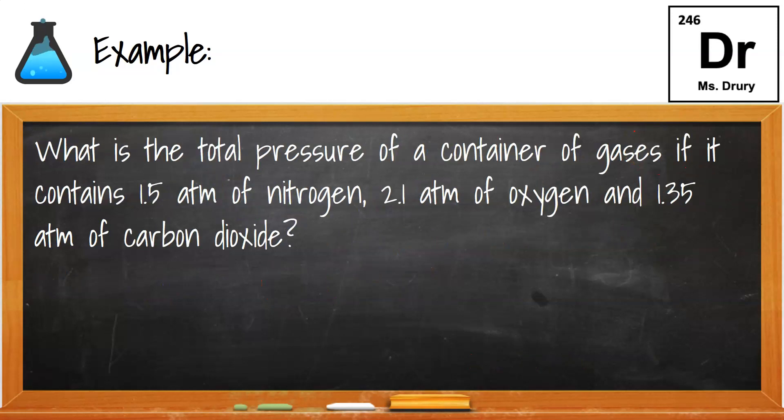So here's another example. What is the total pressure of a container of gases if it contains 1.5 atmospheres of nitrogen, 2.1 of oxygen, and 1.35 of carbon dioxide? Let's see if you can answer this one.